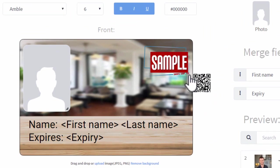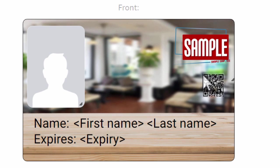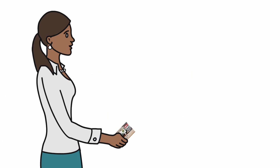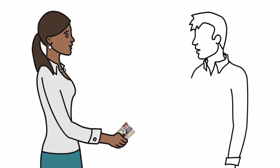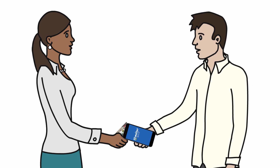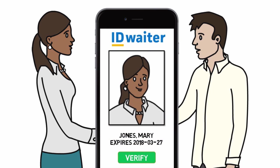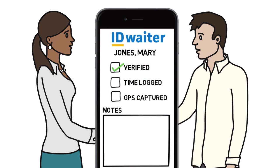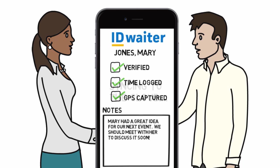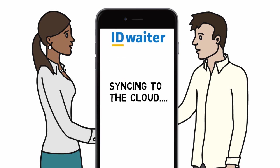Each ID card can also have a unique QR code. So when a member arrives for a meeting or an event, you or your administrators can simply open the IDWaiter app and scan that code to find their complete record. You can verify their identity, log their arrival time, capture the GPS location, and add any other notes. All of this data instantly syncs back to the master database in the cloud.